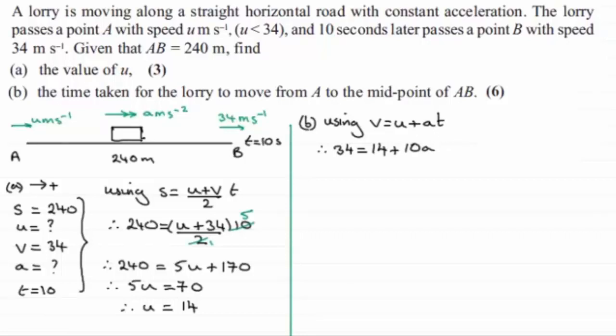And if we just rearrange this, if we take 14 from both sides, we're left with 10A equaling 34 take away 14, which is 20. And dividing both sides now by 10 leaves us with A equals 20 divided by 10, which is 2. And the units would be 2 metres per second per second.